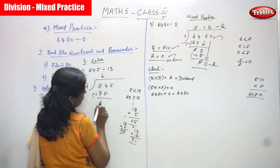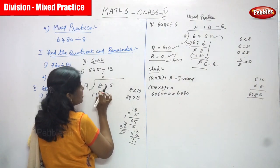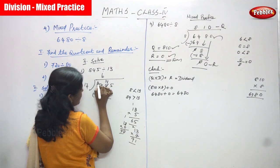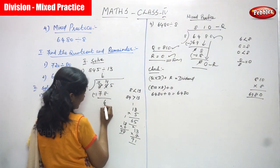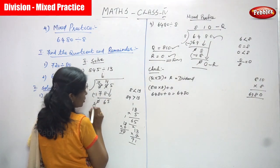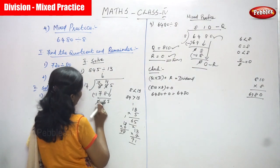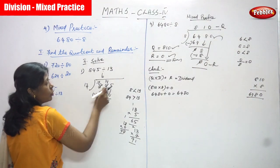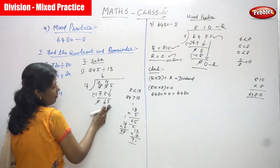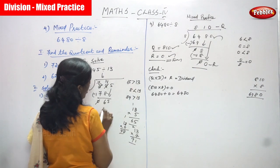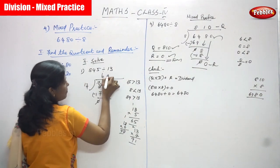Subtract: 84 minus 78. Since 4 is less than 8, borrow from the tens place — it becomes 14, and the tens digit becomes 7. So 14 minus 8 is 6. Then 7 minus 7 is 0. Bring down the 5, giving 65. Compare 6 with 13 — 6 is less than 13, so bring down 5. 65 is greater than 13 — and 13 goes 5 times into 65.